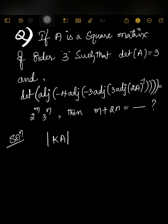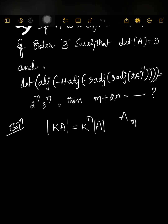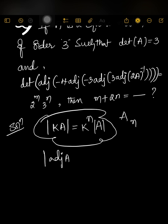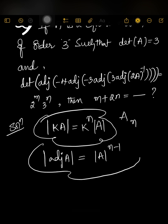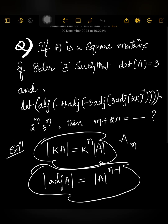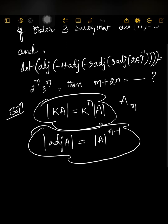The first concept is: if A is a square matrix of order n, then det(kA) = k^n · det(A). The second very important concept is: det(adj A) = (det A)^(n-1). Using these two concepts we can solve the given question.